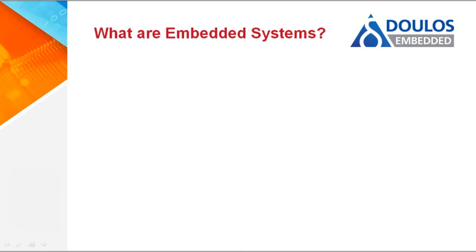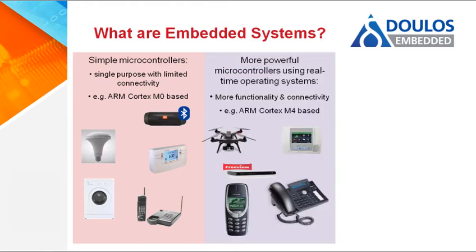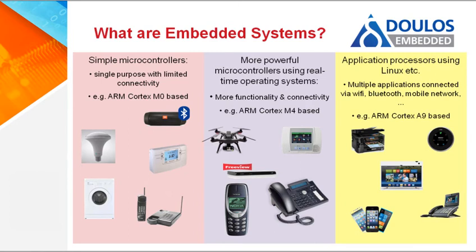We'll do that using some examples of embedded devices from a typical home. The simplest of these, such as a central heating controller or even a smart light bulb, will use a very simple microcontroller such as an ARM Cortex M0 or even an 8 or 16-bit processor. More complex systems typically will use 32-bit devices and use a real-time operating system to provide more connectivity and functionality. Examples include a standard definition set-top box or an IP phone. The most complex devices, using 32 or 64-bit application processors like an ARM Cortex A9, require multiple applications to be running with high levels of connectivity — things like smart TVs or modern network-enabled printers.